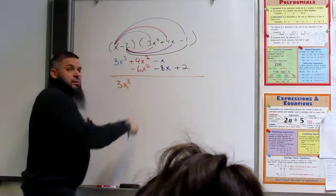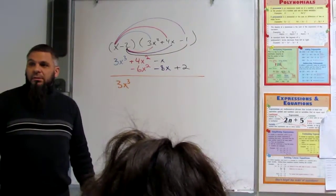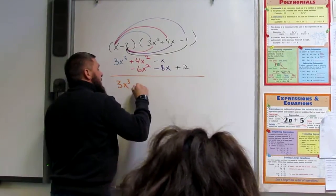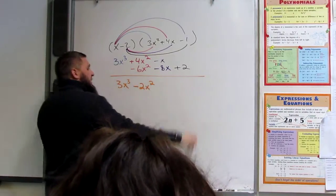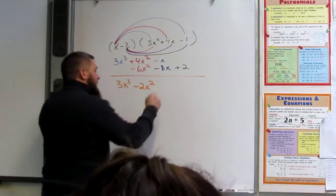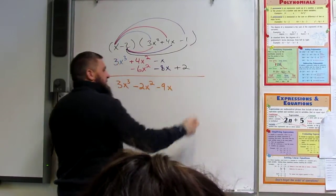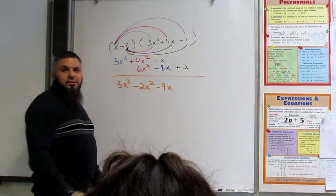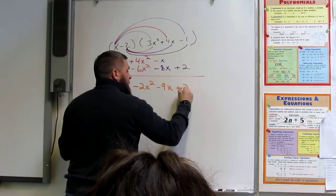What do these add up to be? Negative 2x². And what is these? Negative 9x. Negative 9x. And this one? Plus 2.